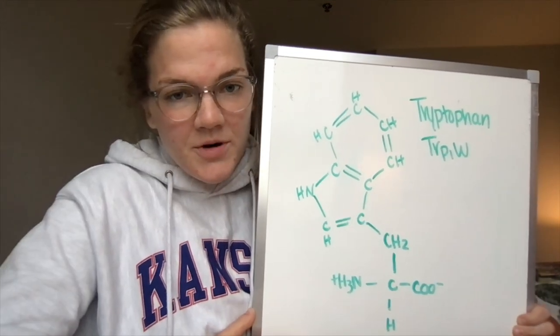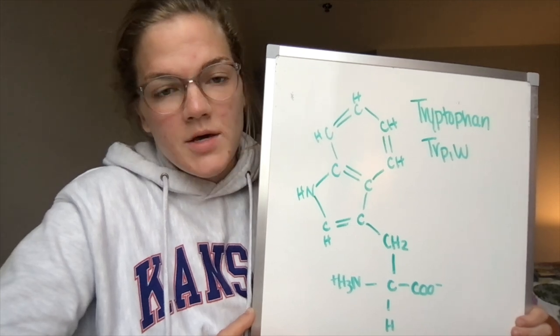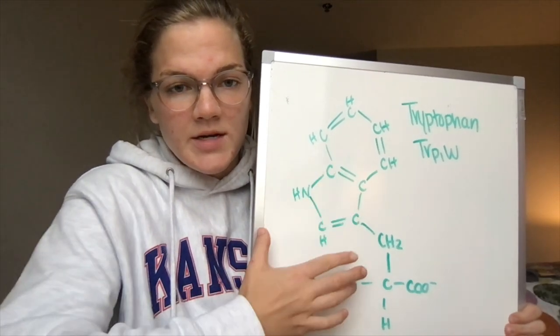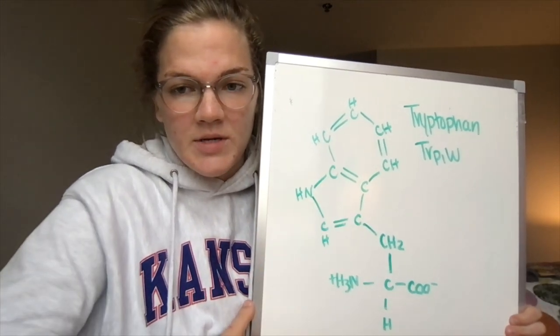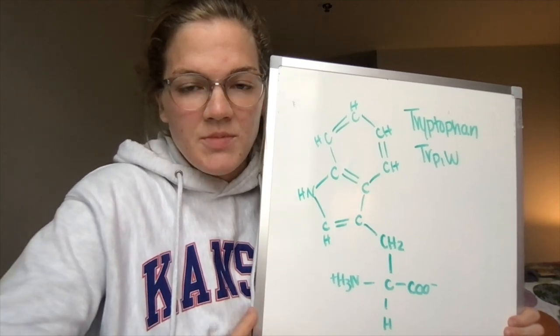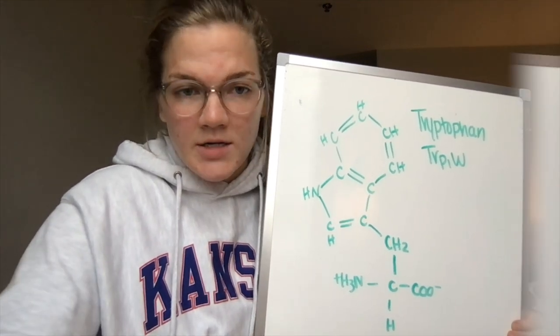For tryptophan, the three-letter abbreviation is TRP. The one-letter abbreviation is W. Here we got two rings for our side group this time. And tryptophan is useful in increasing serotonin.